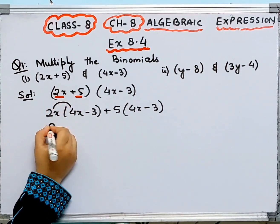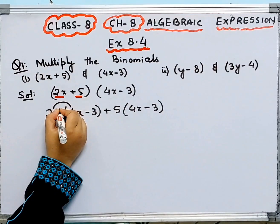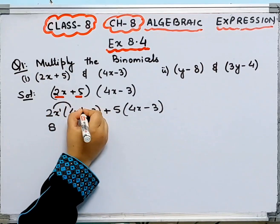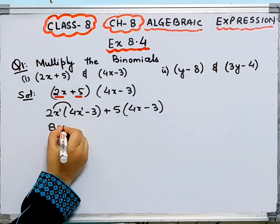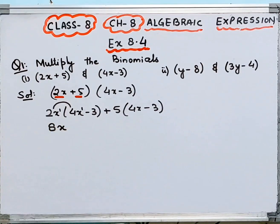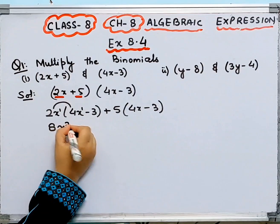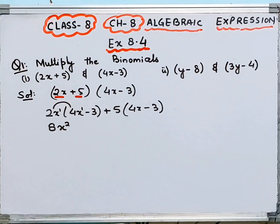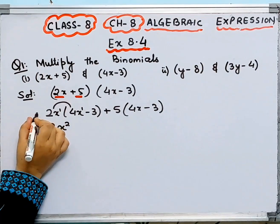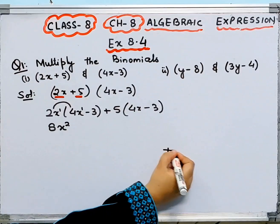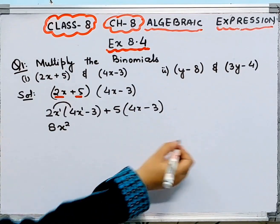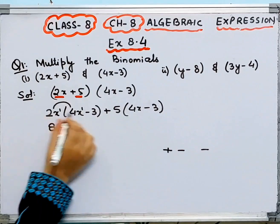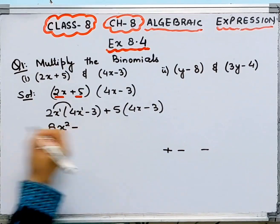2 times 4 is 8, and x times x — the powers add: 1 plus 1 is 2 — so we get 8x squared. Here we have plus and minus multiplied, so plus times minus becomes minus.